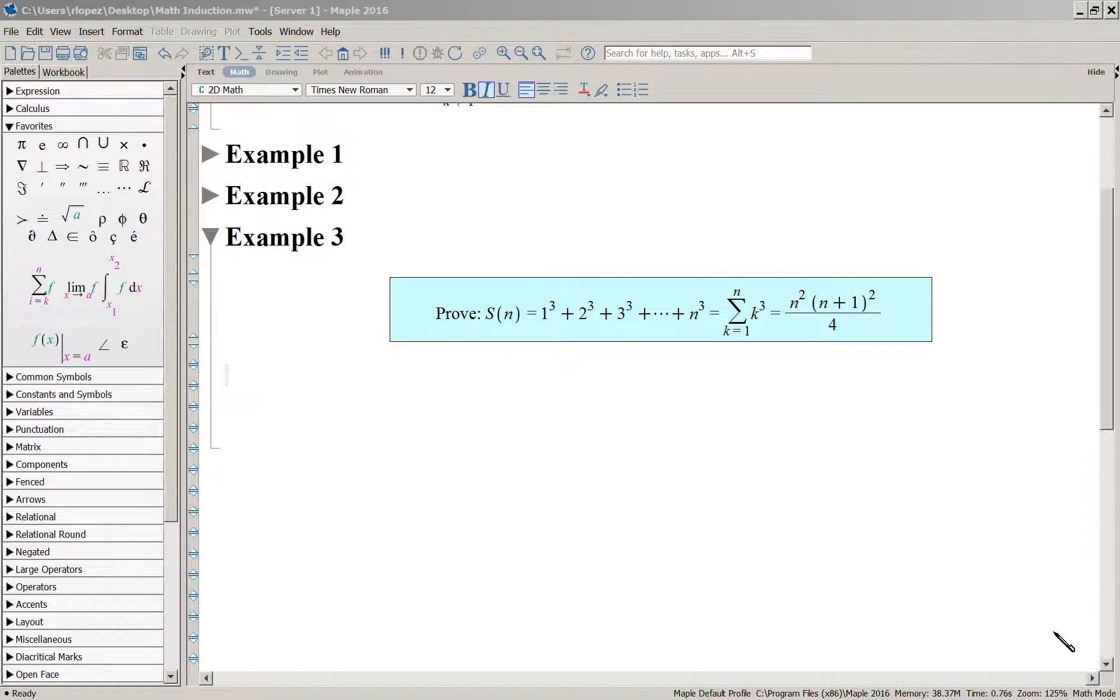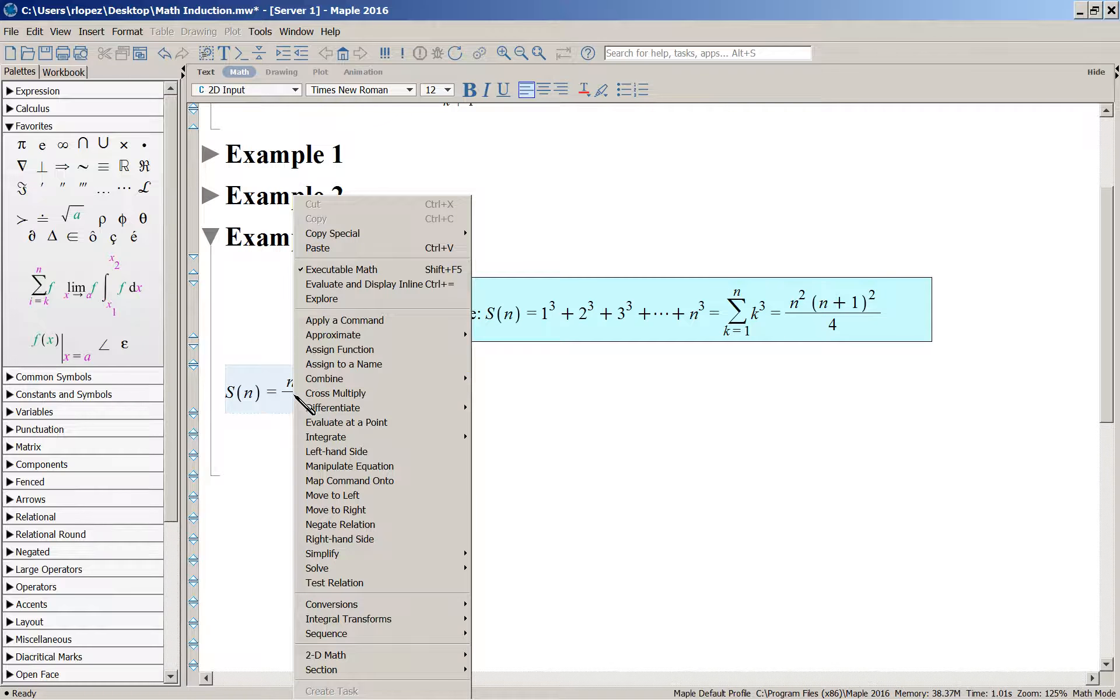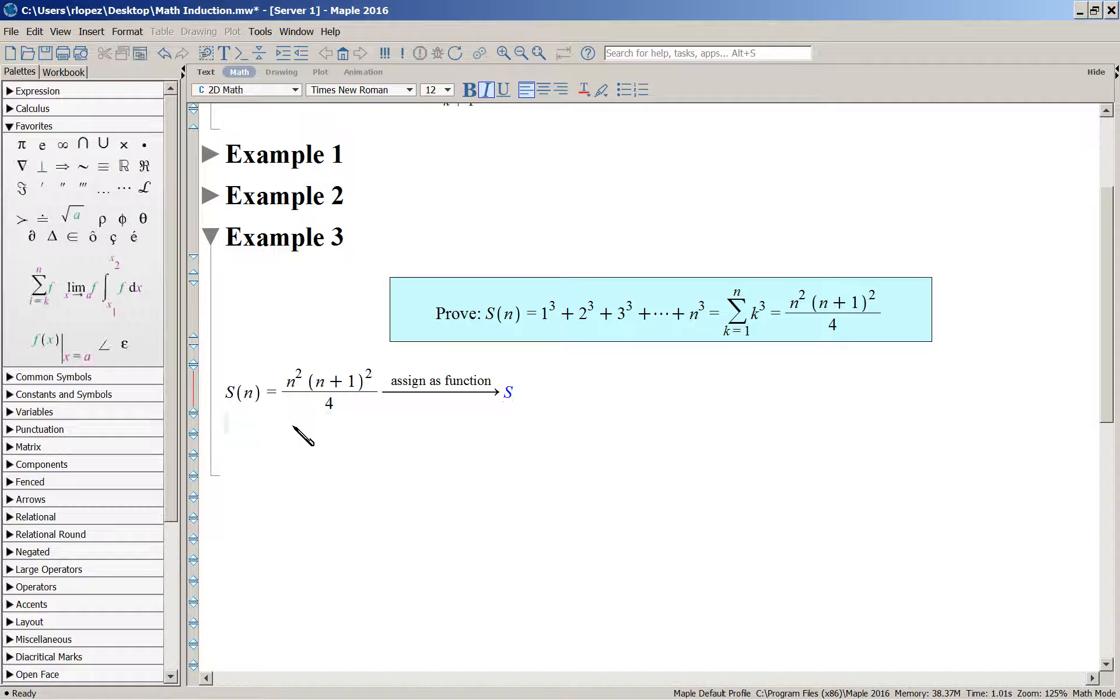And so for a third example, let's show or prove that the sum of cubes, one cube, two cube, three cube, is given by this expression. So we'll proceed as we've done already. Define S of N to be this expression. So we'll make that a function and verify at least one or two of these statements initially are true.